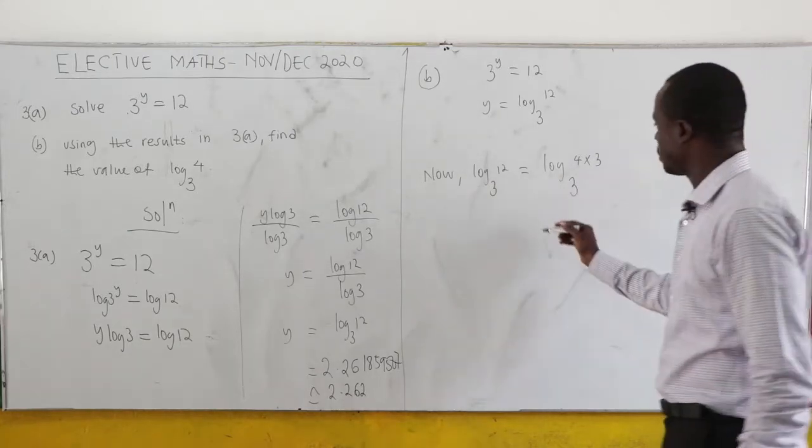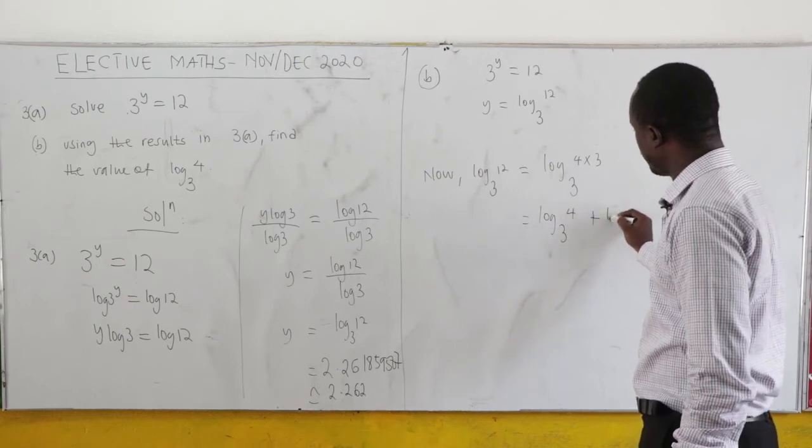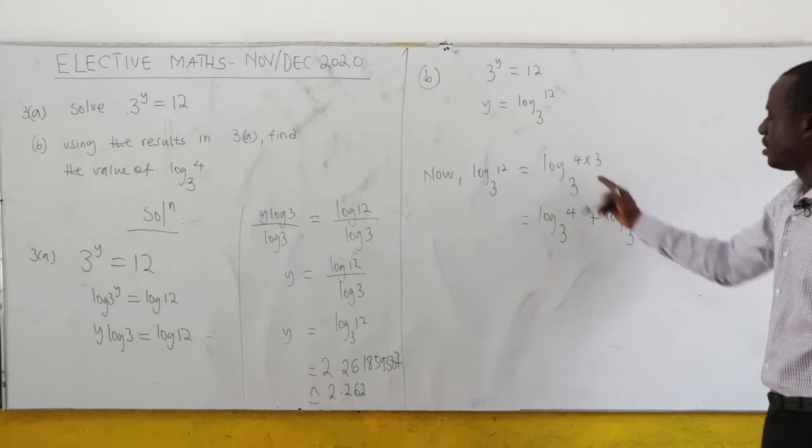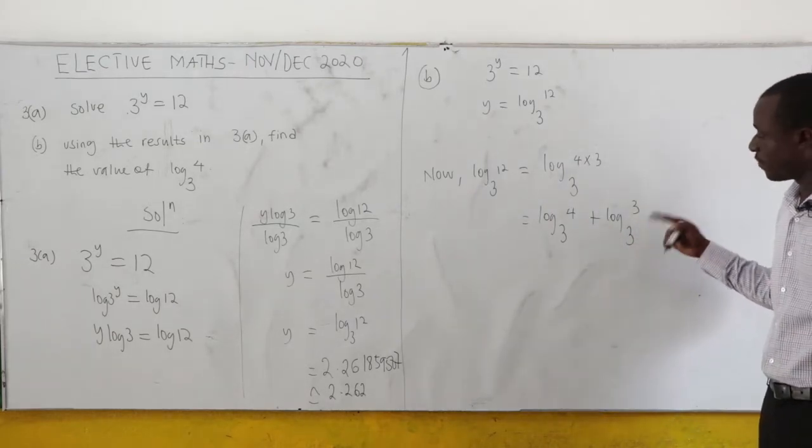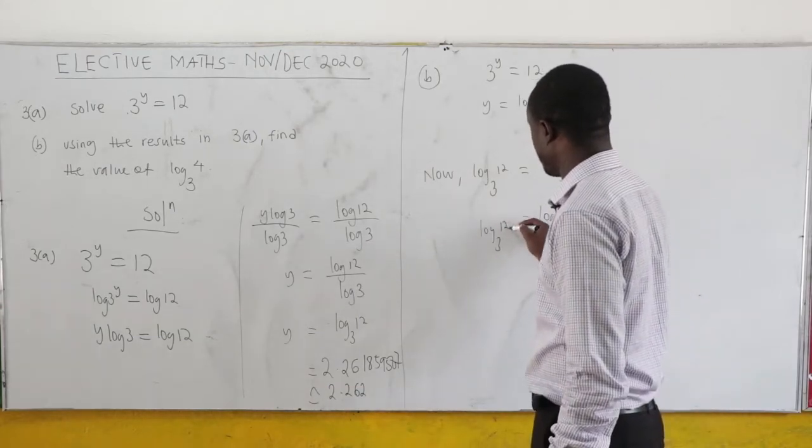Now multiplication is addition. So this is the same as log₃4 plus log₃3. Multiplication changes to addition. Now, what is log e of e? It's 1. So log₃3 is 1. So this is our log₃12.